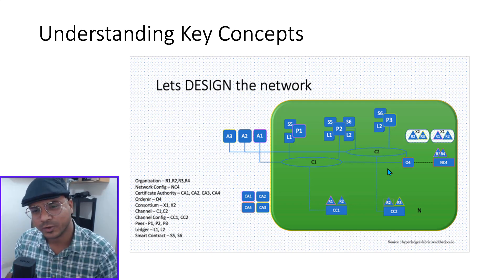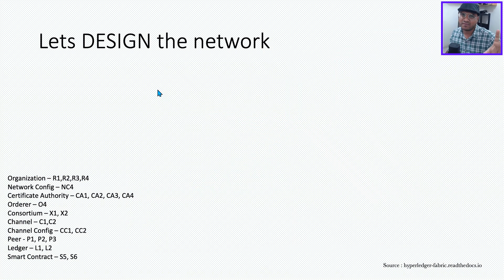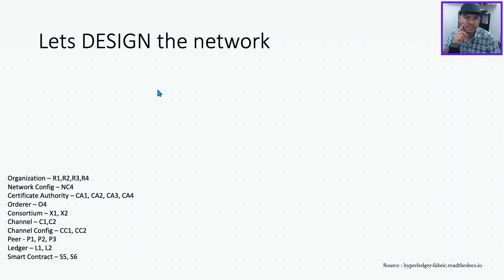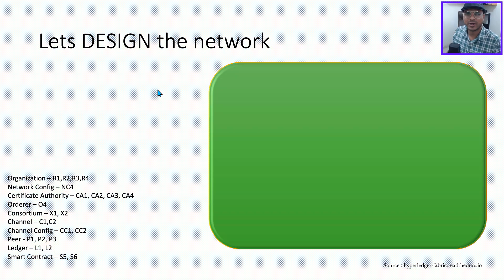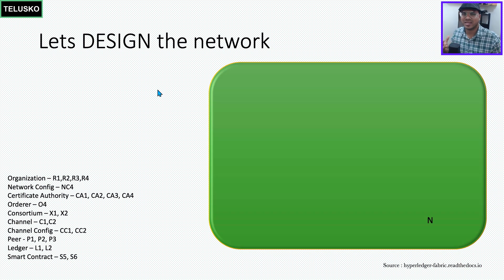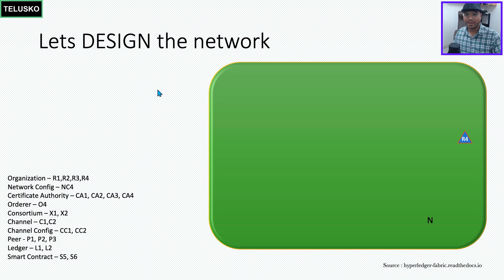Let's start from scratch and make it blank. We have labels: r1, r2, r3, r4 as organizations, network configuration, channels, orderer, consortiums, peers, ledgers, and smart contracts. Step one — we need a network. Let's call it network N. In this network we need organizations, and someone will take the initiative to design it. Let's say r4 takes that responsibility.